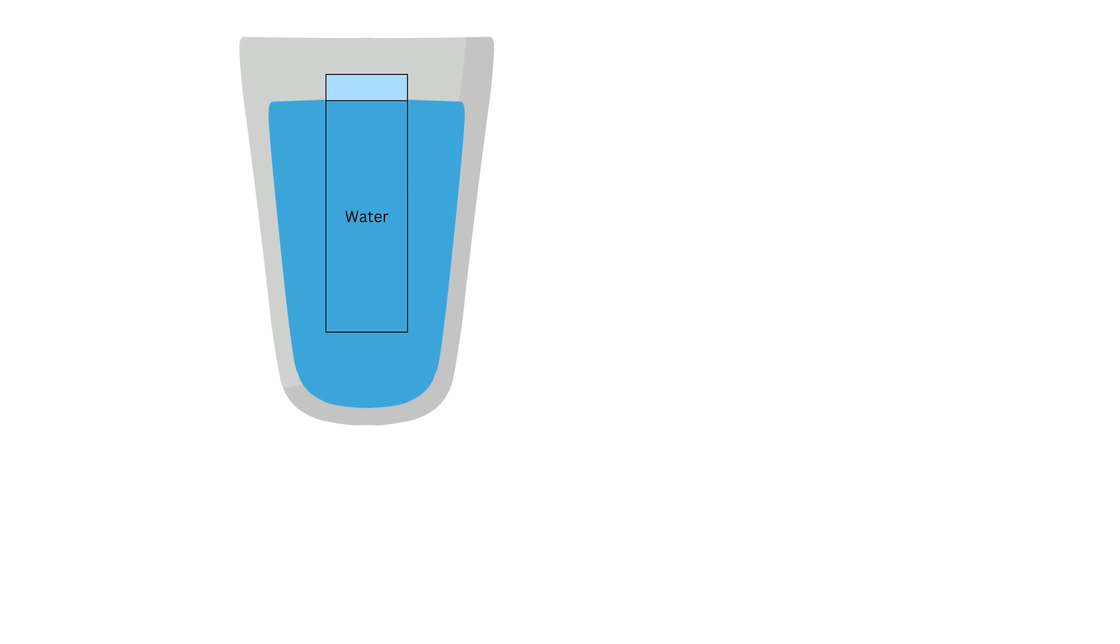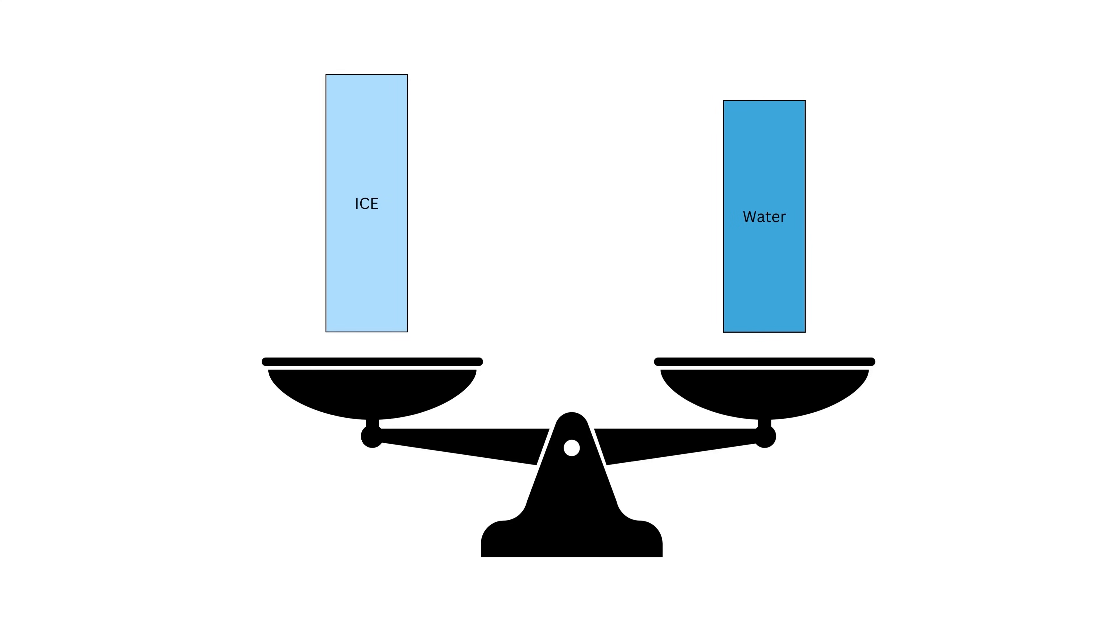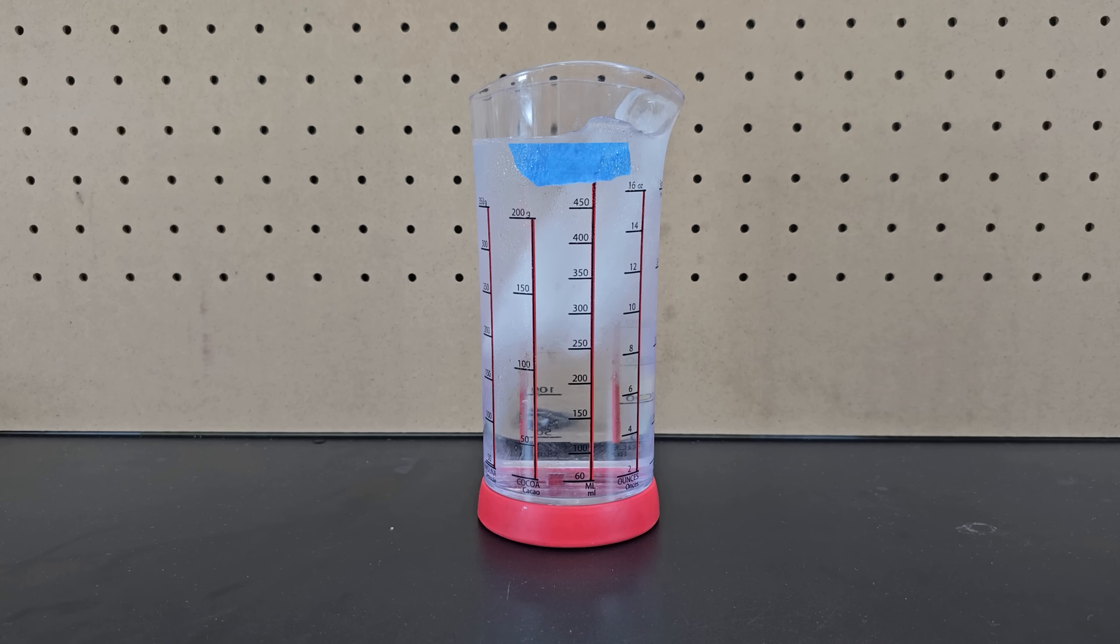Since the ice is floating, it displaces an amount of water equal to its weight which is the same volume of water that it will melt into. I simply added small amounts of water over the course of several hours to make it look like it rose.